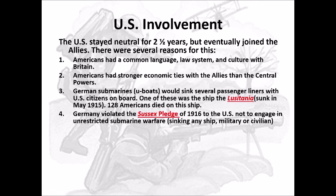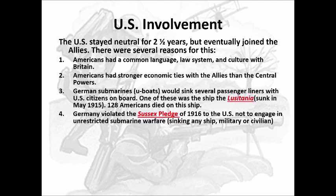Also, Germany violated the Sussex Pledge. In 1916, Germany had pledged to the U.S. not to engage in unrestricted submarine warfare — sinking any ship, military or civilian. They made this pledge saying they wouldn't do it, but they broke it because they sunk the Lusitania. So another reason Americans got upset and wanted to fight on Britain's side was that Germany first sank a cruise liner killing Americans, then promised not to do it anymore, and continued to do it anyway.